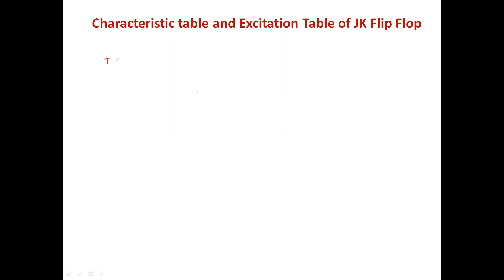Let's write the truth table for the JK flip-flop. It has two inputs, J and K, assuming the clock is high. The output of the JK flip-flop I will take as Q(n+1), that is the next state output. Since I have two inputs J and K, I will have four combinations of inputs: 0 0, 0 1, 1 0, and 1 1.